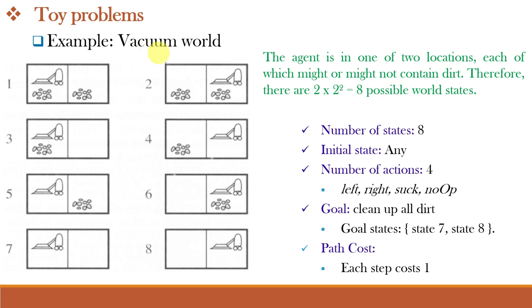The problem for the vacuum world can be formulated as follows. Let us first understand different states of this problem. The state is determined by both the agent location and the dirt location. And here there are two locations, location A and location B. Our agent, the vacuum cleaner, is in one of the two locations. Here it is present in location A. Each of these locations might or might not contain dirt.